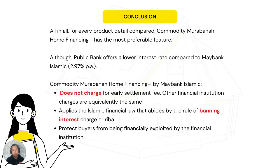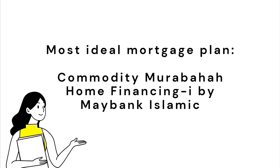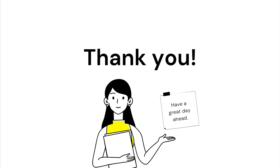All in all, every product has been compared in detail. The most suitable and preferable product is the Commodity Murabaha Home Financing by Maybank Islamic. It was a tough decision because Public Bank offers the lowest interest rate, but it cannot surpass Maybank Islamic's other features. Maybank Islamic does not charge an early settlement fee, bans interest — or riba — and protects borrowers from being exploited by financial institutions. Therefore, the Commodity Murabaha Home Financing by Maybank Islamic is the best mortgage option. Thank you everyone, have a good day and stay safe.